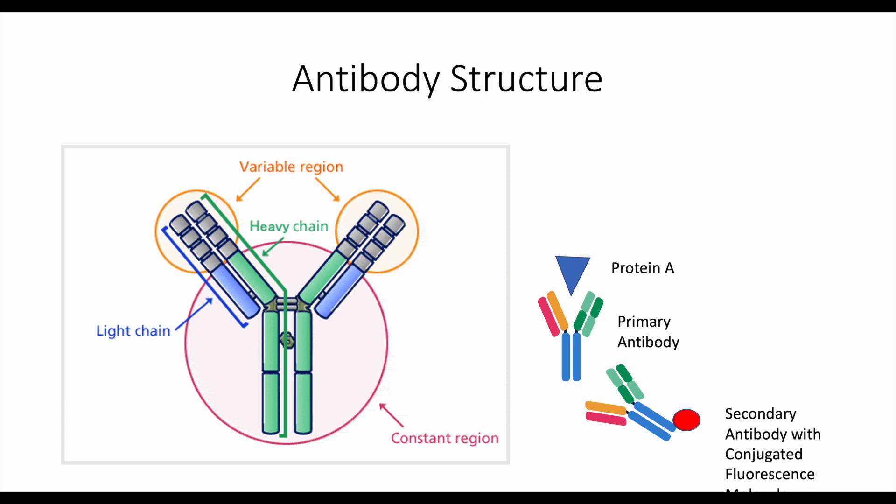For example, if the first antibody was created inside of a rabbit — literally, they inject the protein of interest into the animal and extract the antibody that the animal's immune response created — then the second antibody has to be an anti-rabbit antibody.